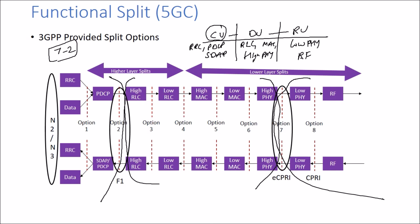For the fronthaul part — that is, between the DU and RU — you may encounter terms like eCPRI or CPRI. Both terms are used for the fronthaul interface. eCPRI is the enhanced version of CPRI, and CPRI is the Common Public Radio Interface used for the connection between the DU and RU. Thank you.